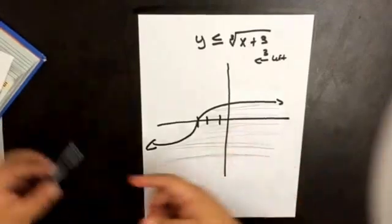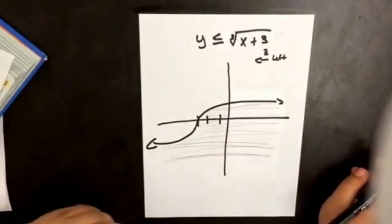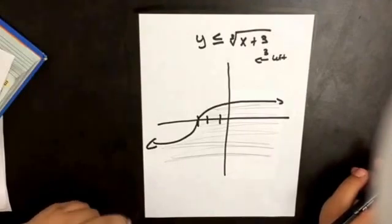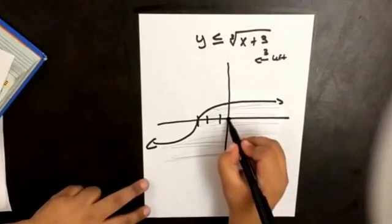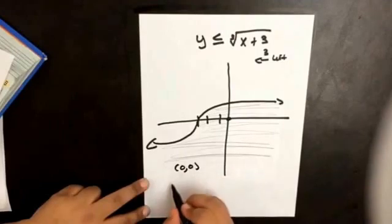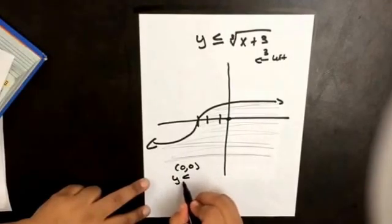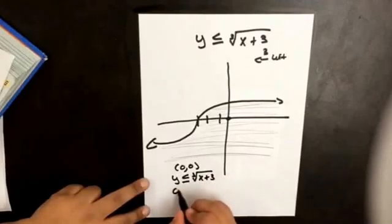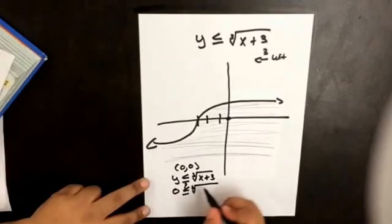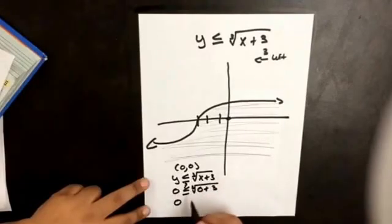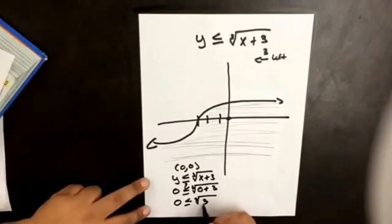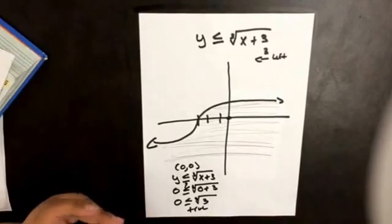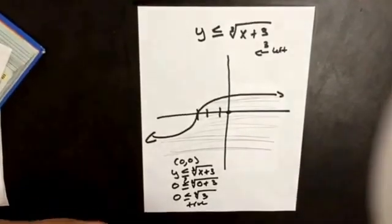We want to test a value — what if we test the point (0, 0)? So y is less than or equal to the cube root of x plus 3: 0 is less than or equal to the cube root of 0 plus 3, which is 0 less than or equal to the cube root of 3. That's true. And that's how you graph radical inequalities.